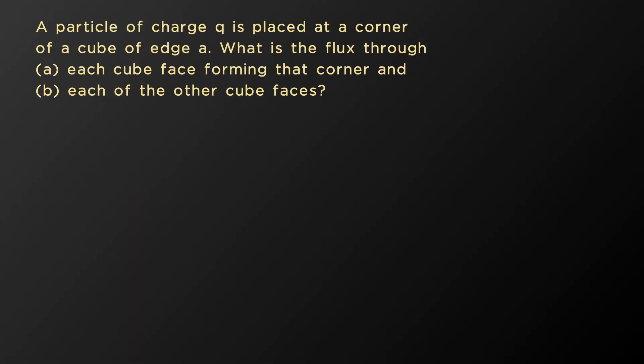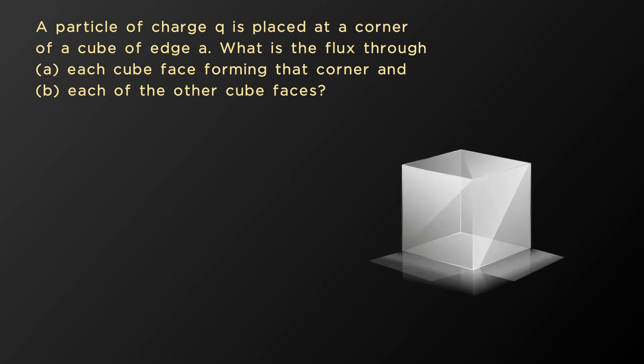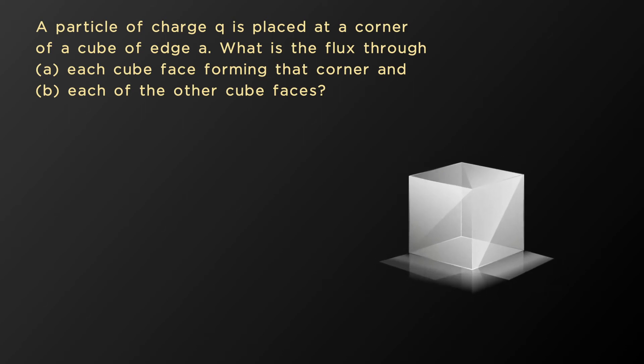Given that a charge Q is placed at the corner of a cube of side A, let's consider this cube with the charge Q placed at this corner. The electric field lines due to the presence of this charge radiate outward from the charge position.